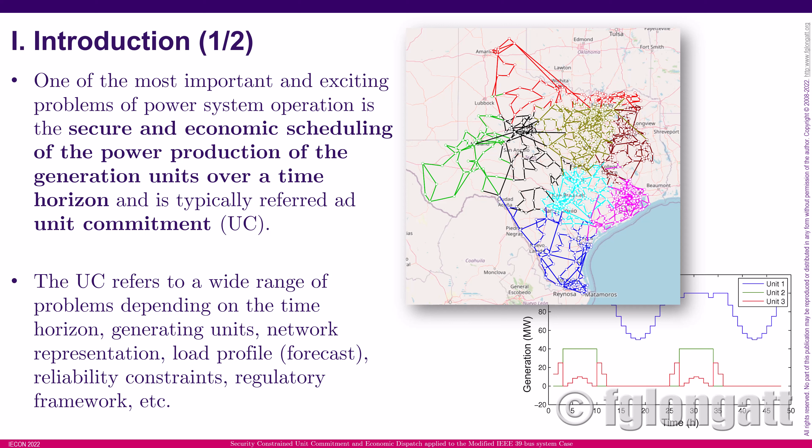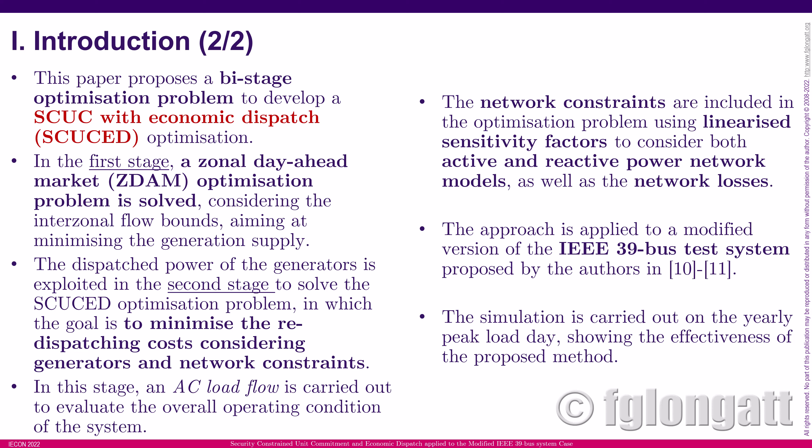In this paper, what we are proposing is basically a two-stage optimization problem to develop a security constrained unit commitment with economic dispatch optimization — what we call the SCUCED. In the first stage, a zonal day-ahead market optimization problem is solved considering the interzonal flow bounds, aiming to minimize the generation supply. The dispatch from that stage is then used in the second stage to solve the secure optimization problem, where the goal is to minimize the redispatching costs considering the generator and network constraints, using an AC load flow non-linear formulation.